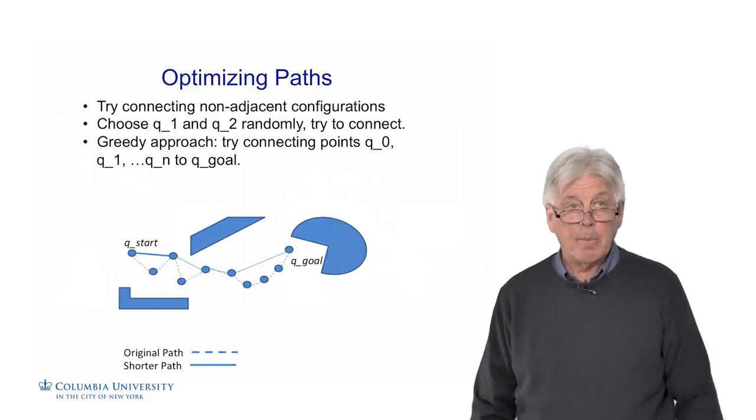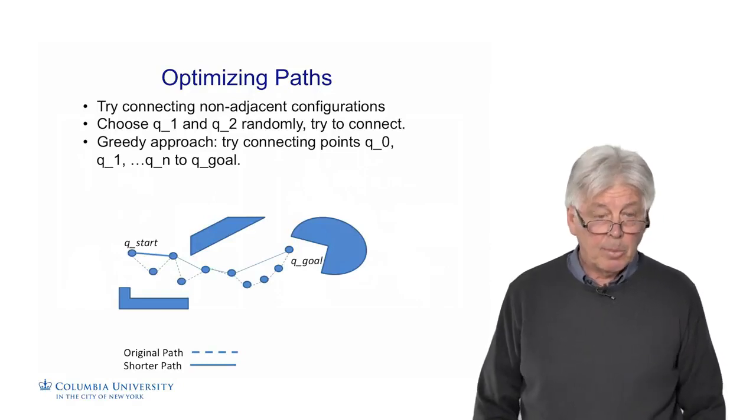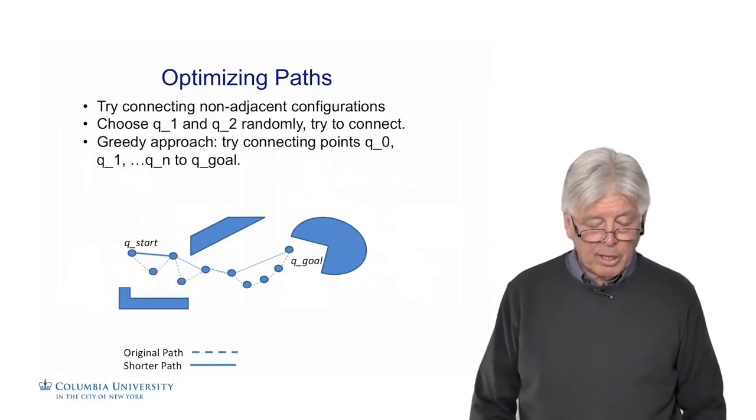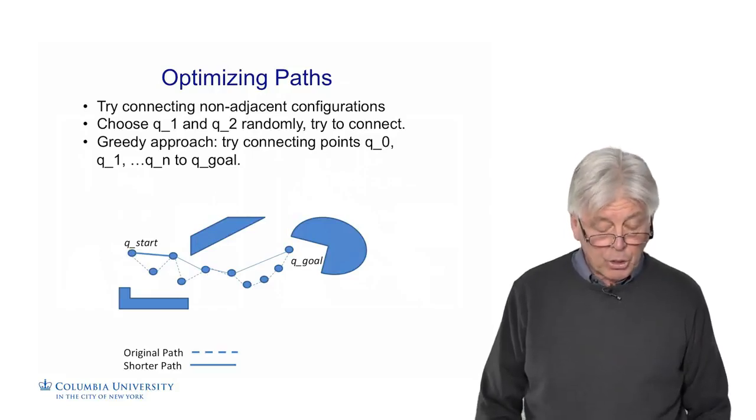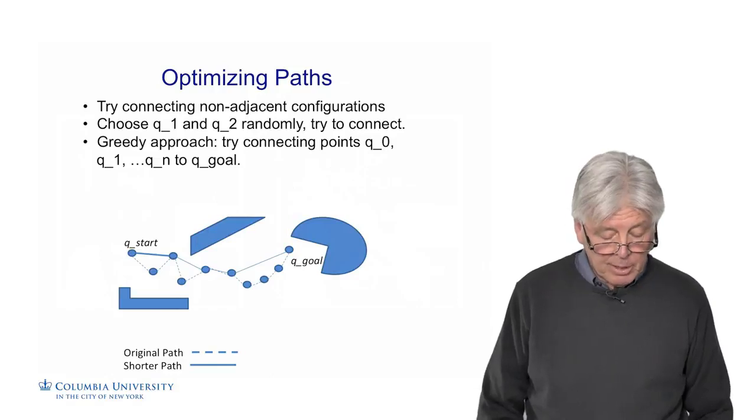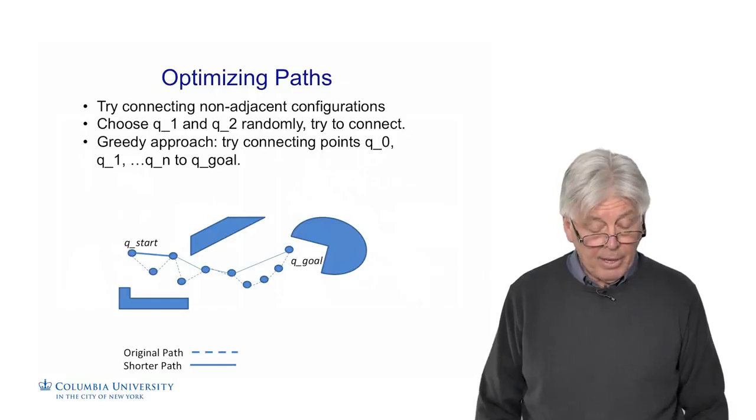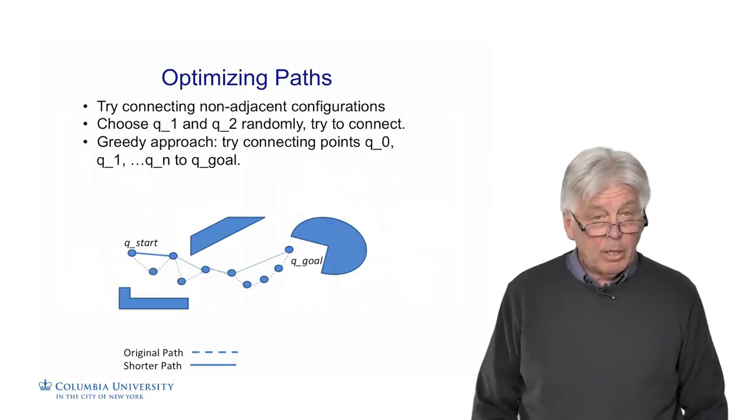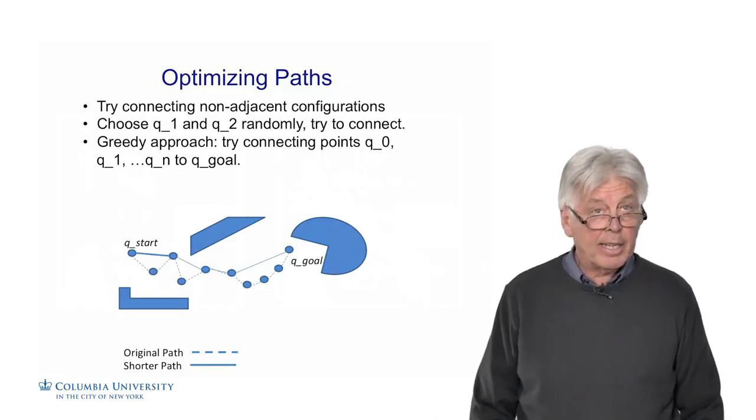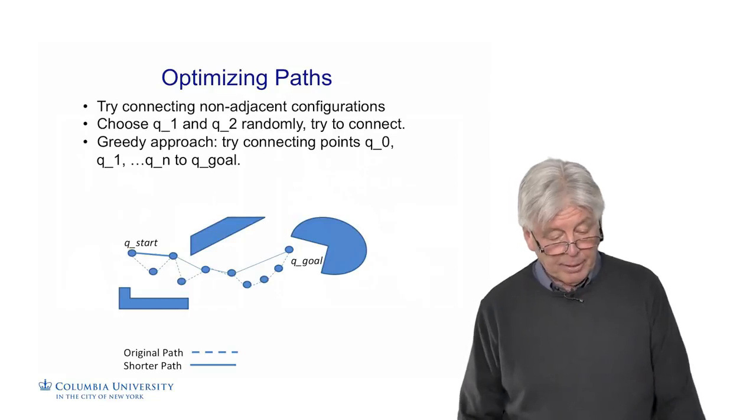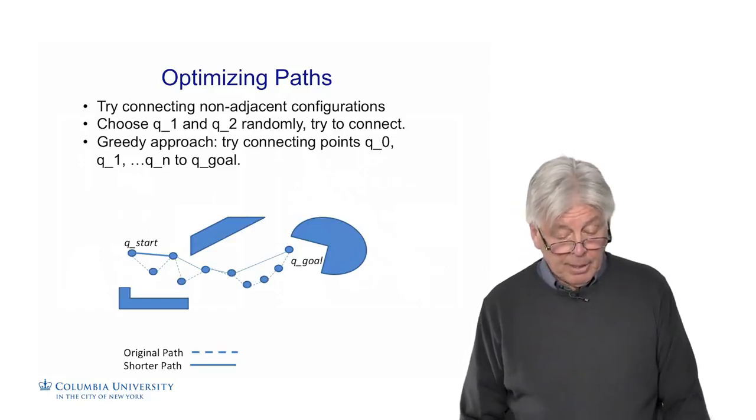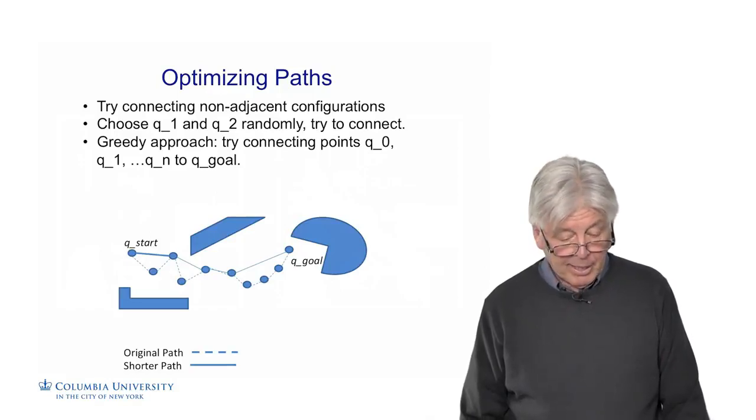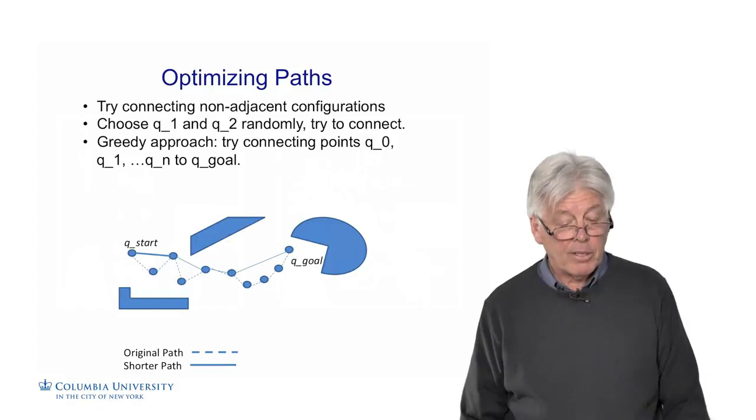One thing is we said these paths are not optimal. We can try to optimize them and do some smoothing on them. The first thing is to try connecting non-adjacent configurations. You can see in this graph we have the dots or the original path, which is kind of herky-jerky, not straight line, which we like, or optimal in some sense. What we can do is just take every other vertex along the path and see if we can connect them up. We have the first three vertices in the original path. We can take one and three and see if we can connect them up, and that will bypass two. We can choose two of these vertexes along the path randomly and try to connect them. The greedy approach is trying to connect directly to the goal, but that's a little too greedy. But you can make the path more efficient afterwards by doing these optimizations.